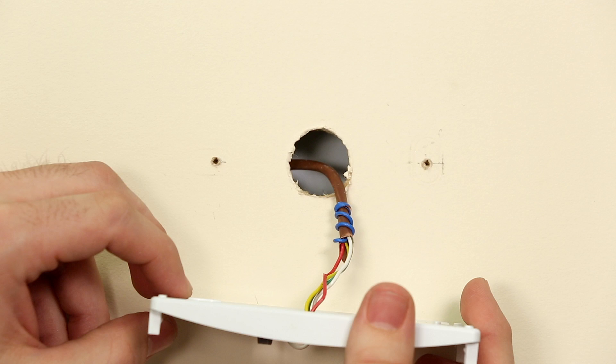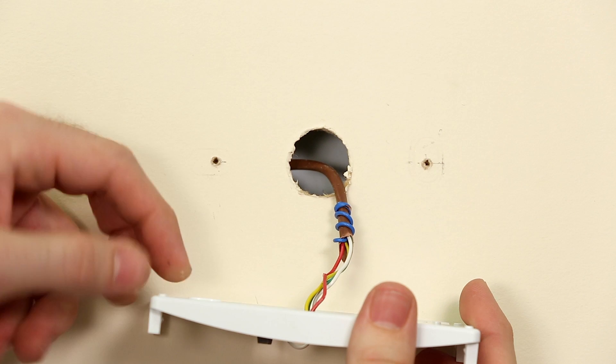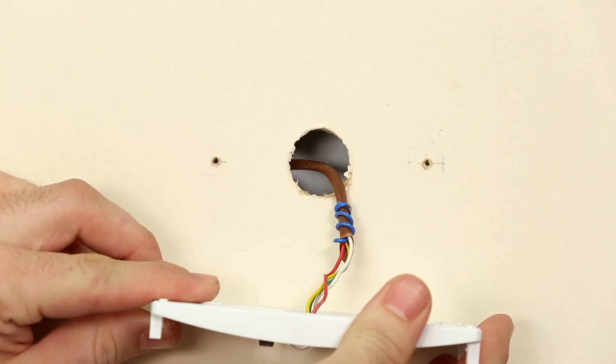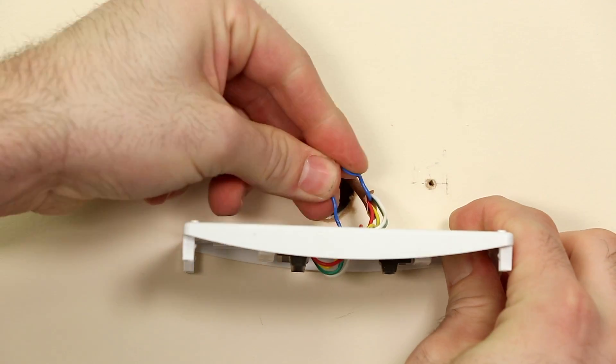Once you locate the bundle, look to see if there is an unused wire. If you see an unused wire in the wire bundle, you can use this as your C wire. Pull this wire out from behind the wall.